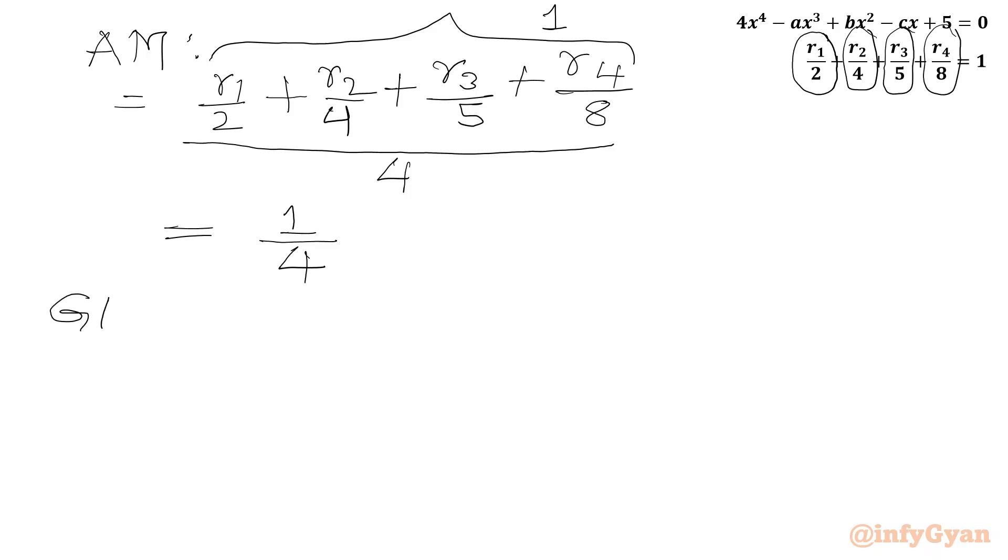Now we will calculate geometric mean. So geometric mean will be fourth root of product of all the numbers: R1 over 2 times R2 over 4 times R3 over 5 times R4 over 8.